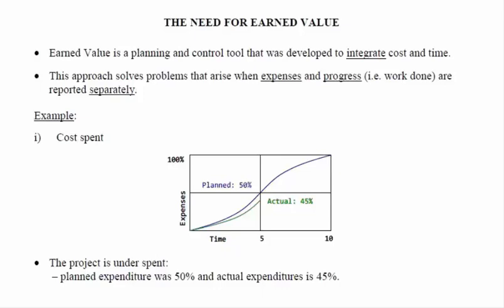In this example, we start by reporting information related with the cost spent of a project. The duration of the project is 10 days and we are at the end of its fifth day of implementation. We have in blue the planning of the cost spent over time, and in green what actually happened. We can see that after five days, it was planned to spend 50% of the total cost, but the actual expenditure was only 45%. When we analyze this information separately, it seems like a good result because it suggests we are spending less than planned. But we need to analyze more information.